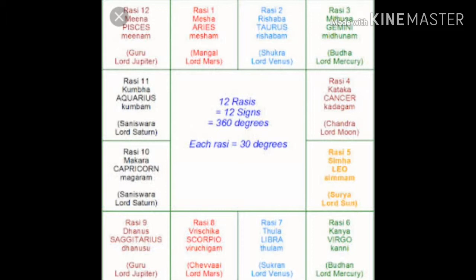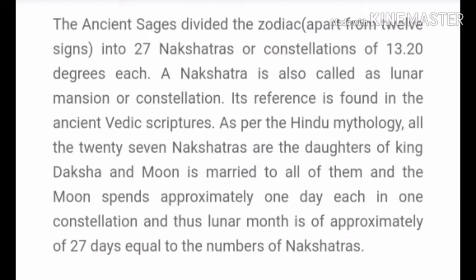In layman's terms, a Nakshatra is nothing but a constellation or a collection of stars. There is a story: Brahma had a son called Daksha, who was the Prajapati — lord of the universe and the earth and skies. Daksha Prajapati had 27 daughters. When his daughters grew up, he wanted to marry them to a handsome person. The Moon at that time was the most handsome person, so Daksha Prajapati married his 27 daughters to the Moon. These 27 daughters married to the Moon are known as Nakshatras in Vedic Astrology.